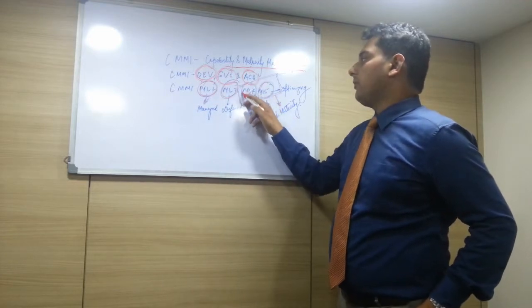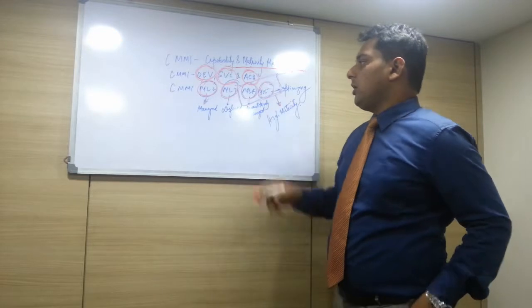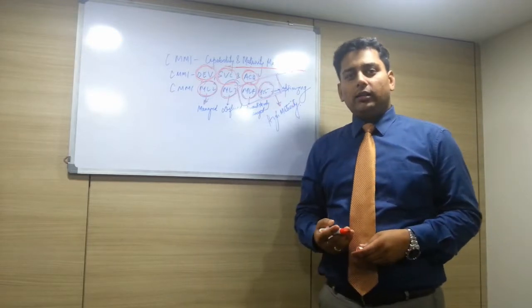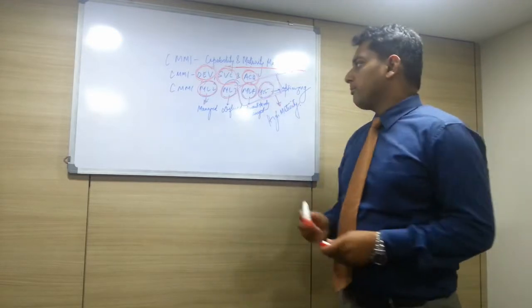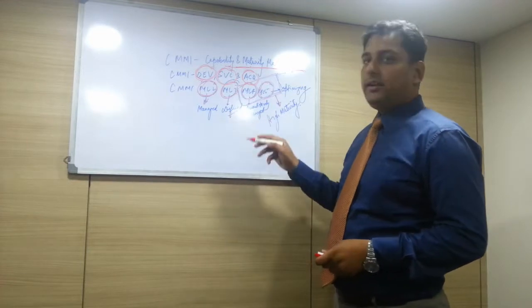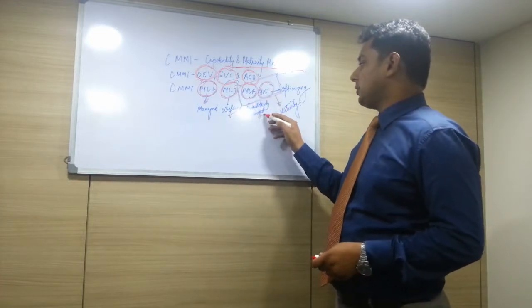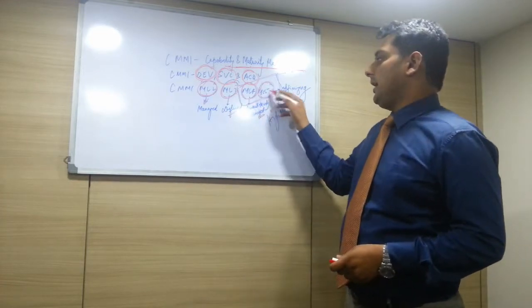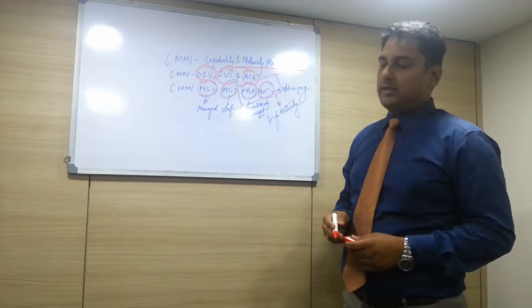We also call Maturity Level 2 as Managed, Maturity Level 3 as Defined, Maturity Level 4 as Quantitatively Managed, and Maturity Level 5 as Optimized.